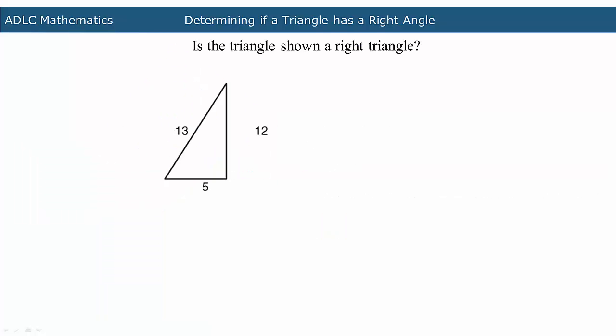Is the triangle shown a right triangle? First, label the sides of the triangle. The longest side of the triangle should be labeled C.